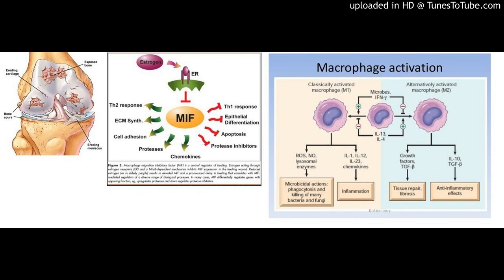Conclusion: MIF inhibitor Z590 possesses potent anti-arthritic activity through suppression of macrophage activation, and could be a potential therapeutic treatment for RA. PMID: 29447014.